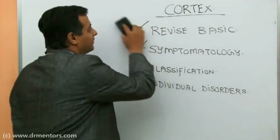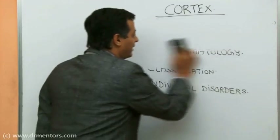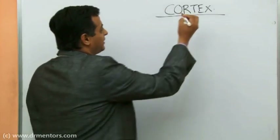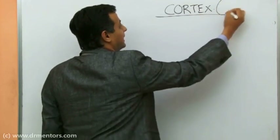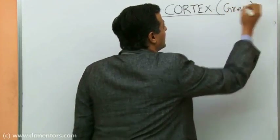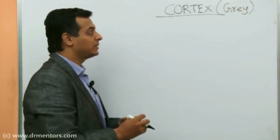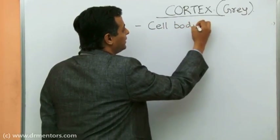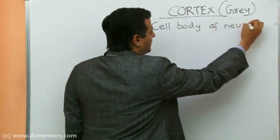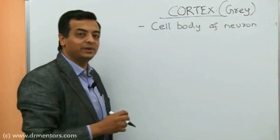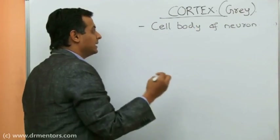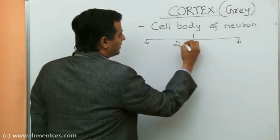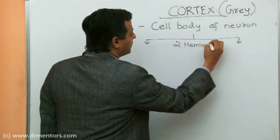Let's start with the basic anatomy and physiology of the cortex. The cortex is also called the gray matter. It contains the cell body of the neuron — it is the heart, the core. The cortex is broadly divided into two hemispheres.